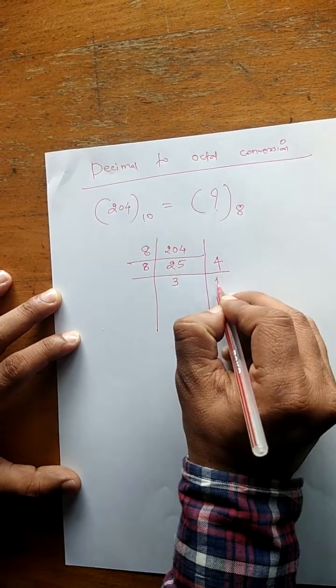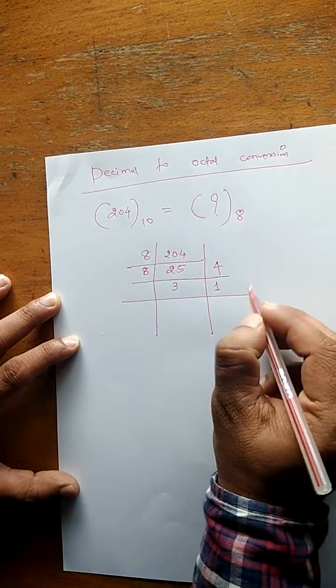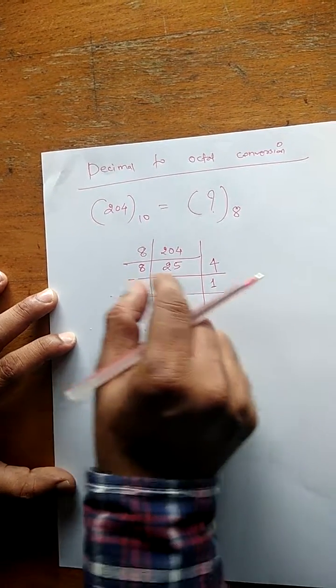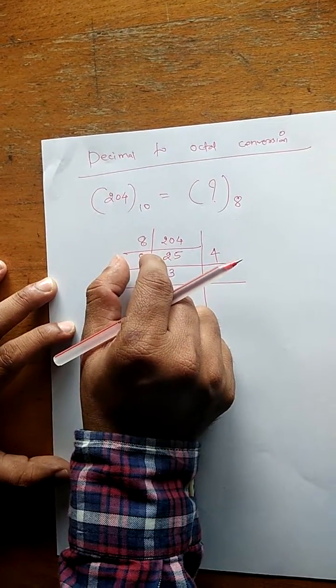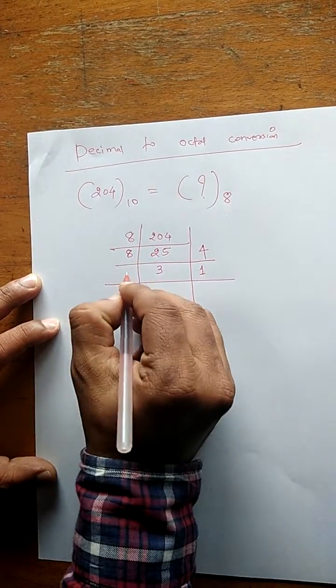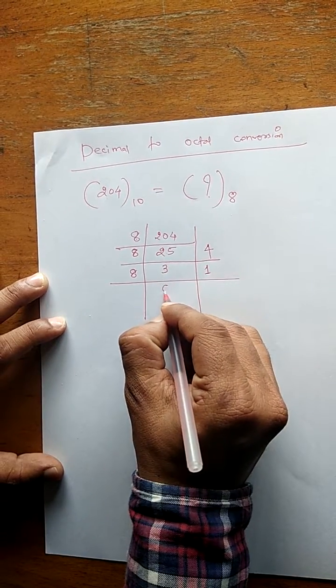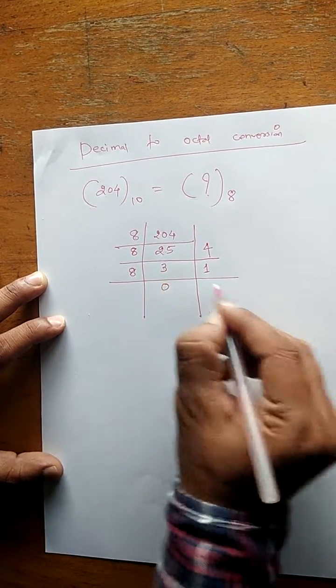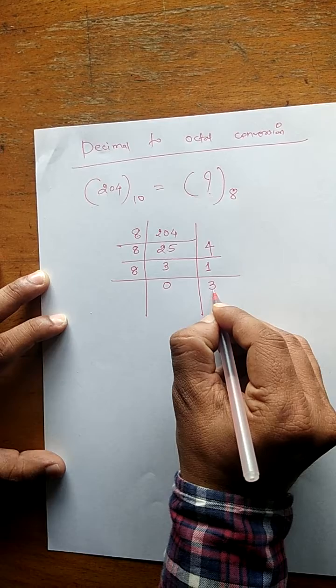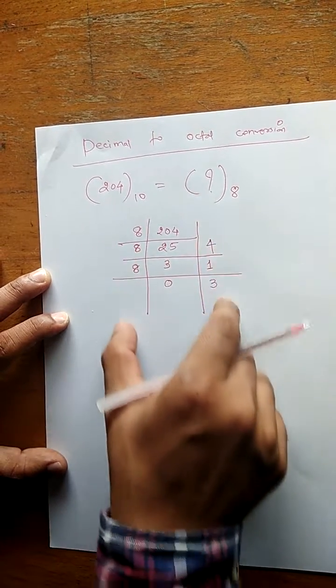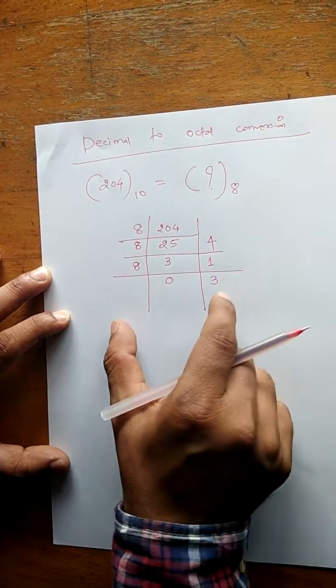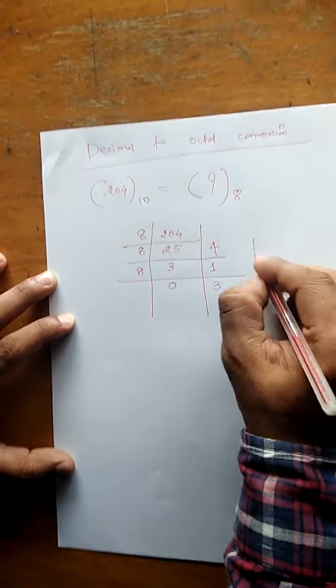So you have to write it as is. After this, write down 0 and this number as it is on the right-hand side. Here you have to stop. While writing the final answer, we have to use a bottom-up approach, so the final answer will be 314 in octal. Thank you.